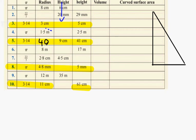In question eight, the pi value is given. The radius is 4.8, and the slant height is 5. The slant height is the hypotenuse. We don't know the height but we know the slant height, which is 5.